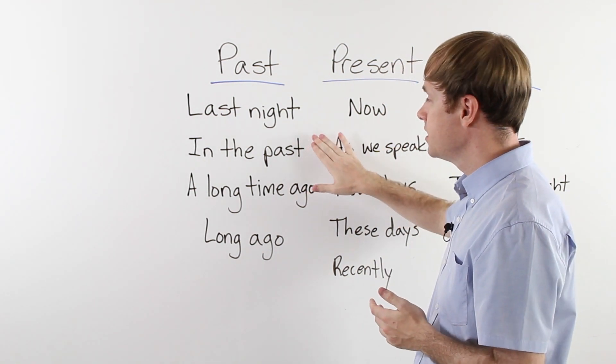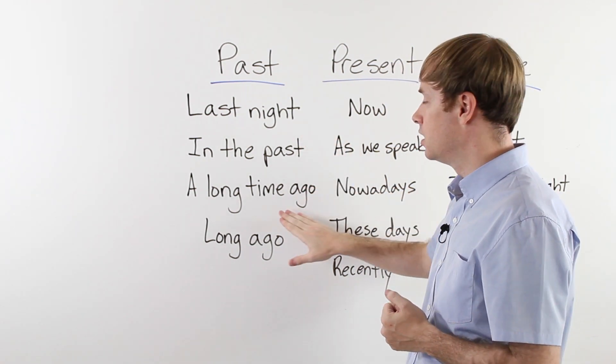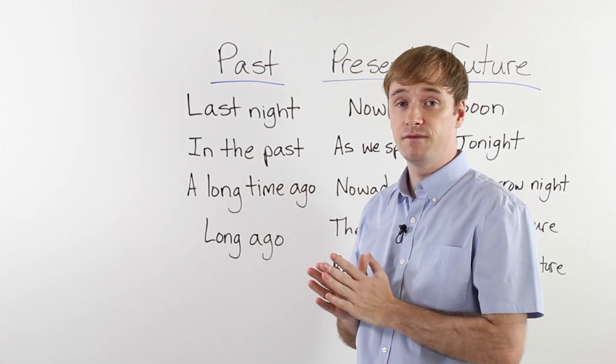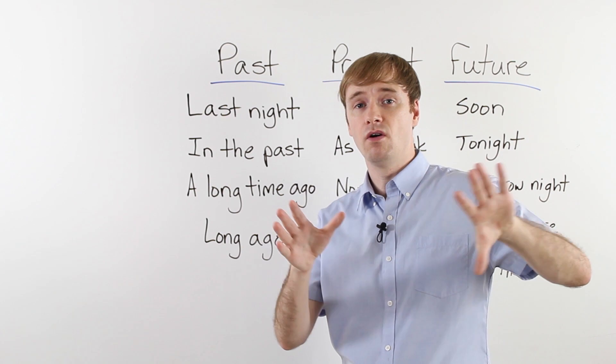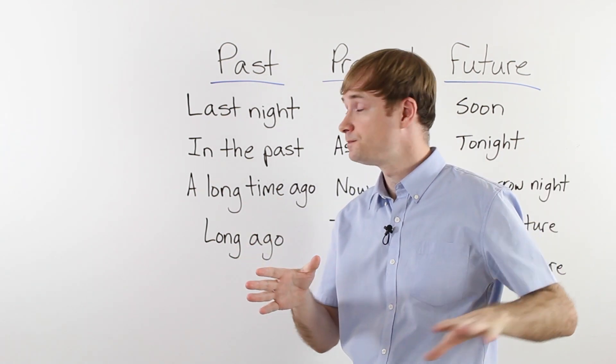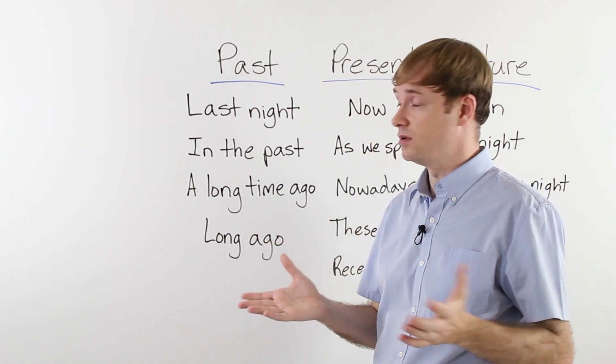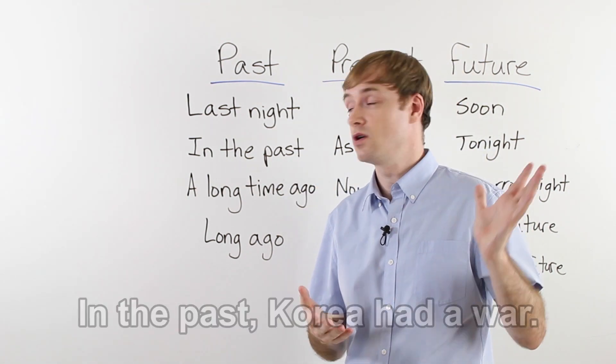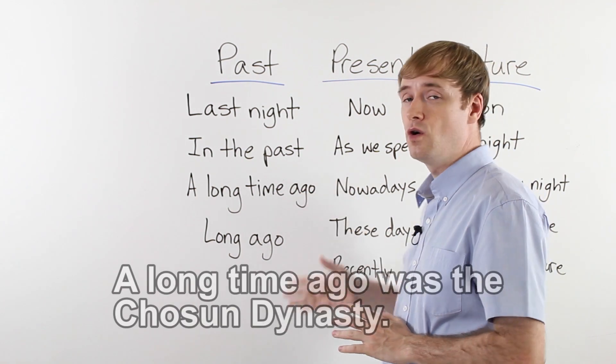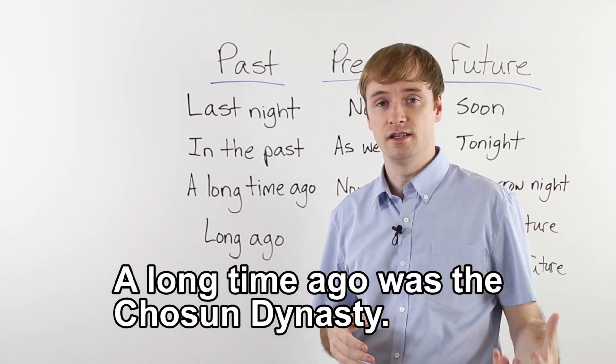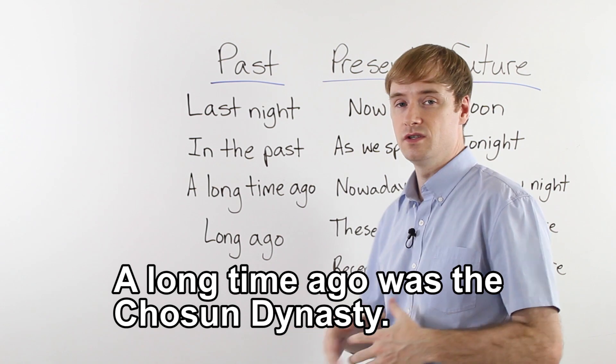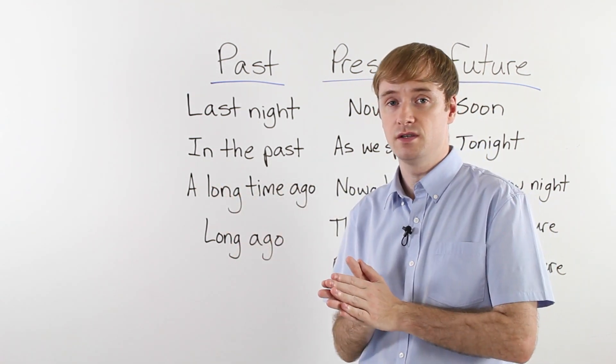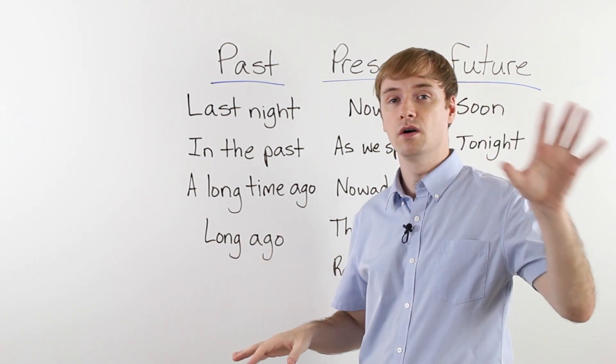Now the next three: in the past, a long time ago, and long ago. These are things that happened before, but a very long time has passed. So for example, in the past Korea had a war. So that was long ago. A long time ago was the Chosun dynasty. Long ago was the Chosun dynasty. All of these are good expressions to talk about something long ago.